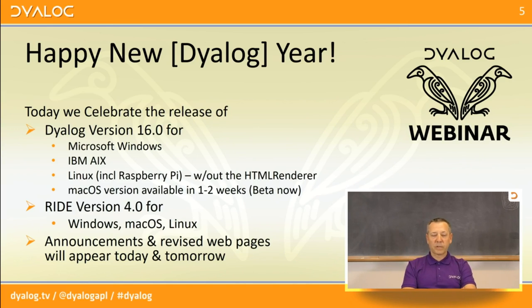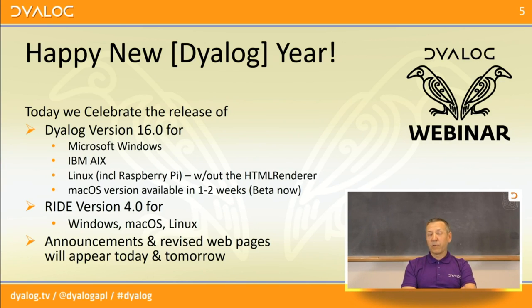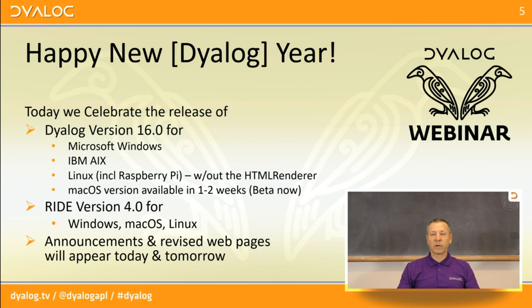Today we are celebrating the release of Dyalog version 16, which is available on all platforms with some restrictions I'll get to. The Ride version 4 is being released simultaneously on Windows, Mac, and Linux. If you haven't already seen the web pages, I think they're going live as we speak. The last emails, announcements, and tweets may come tomorrow.